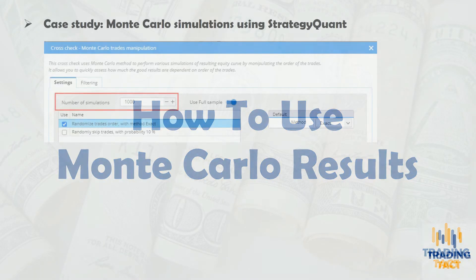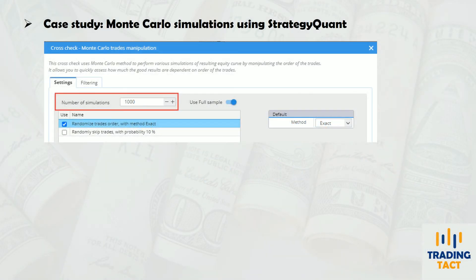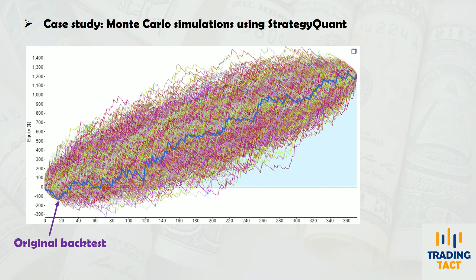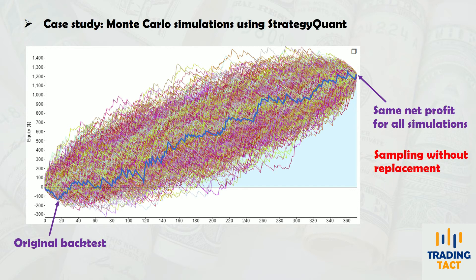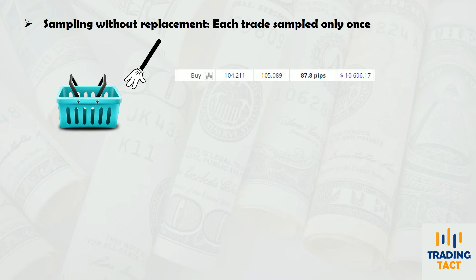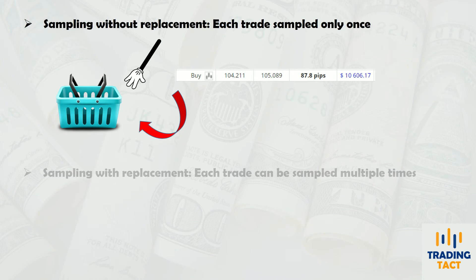I'll take a sample strategy and run it through StrategyQuant's Monte Carlo simulator, producing 1000 equity curves. The blue equity curve reflects the original backtest. Notice how the overall net profit remains the same for all the equity curves — this is a consequence of sampling trades without replacement. Returning to the basket of trades analogy, this means each trade cannot be selected more than once. But what if you return each trade to the basket after selecting it? This means each trade can be selected more than once, which is known as sampling with replacement.